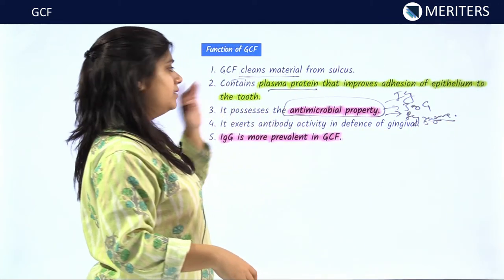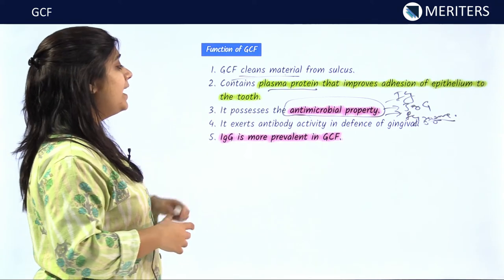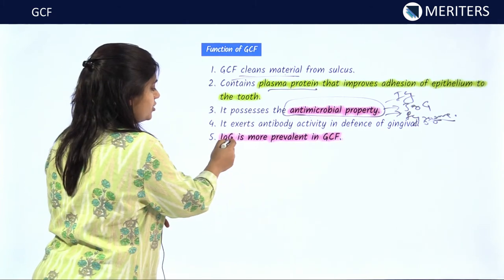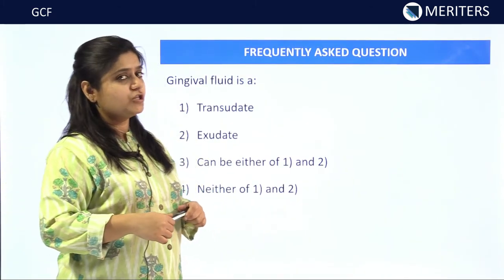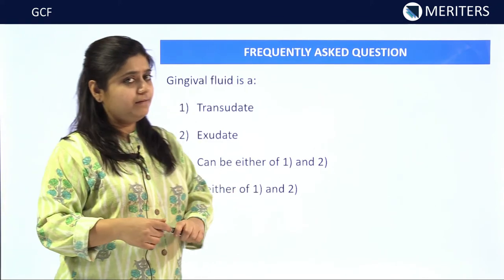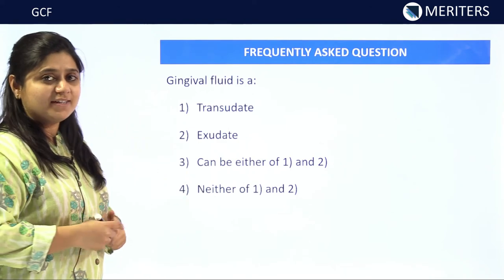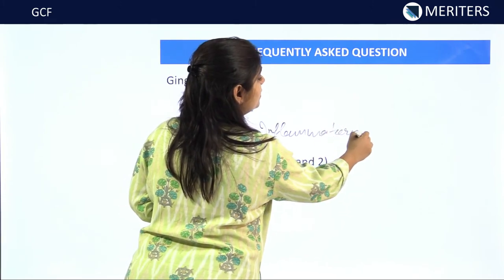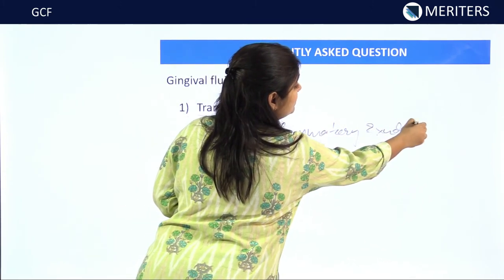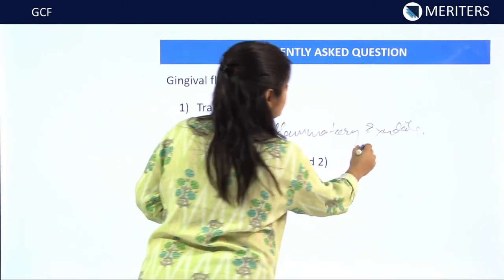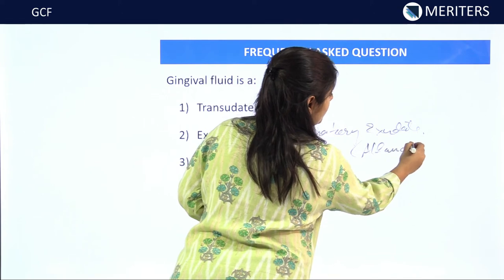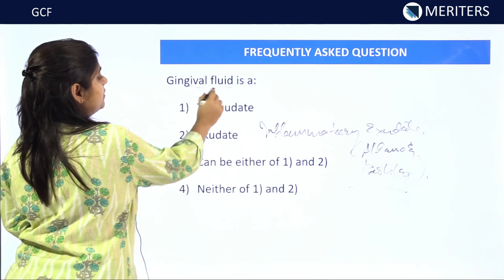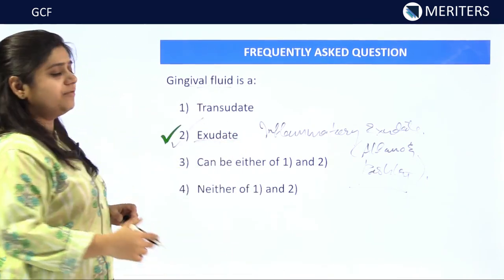GCF possesses antimicrobial activity and exerts antibody activity in the defense of the gingiva, the most prevalent antibody in GCF being IgG. The first MCQ: what is gingival fluid? Gingival fluid is an inflammatory exudate — only a small amount is a transudate, but mostly it is an inflammatory exudate as proposed by Alfano and Paschle. The answer is inflammatory exudate.